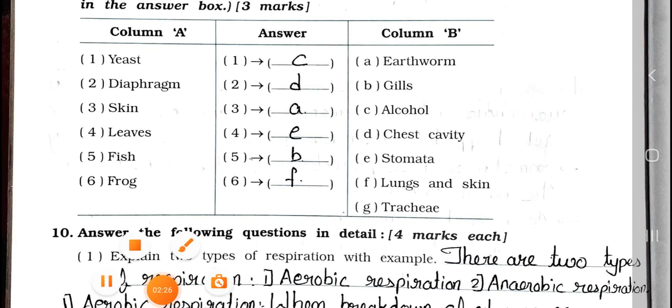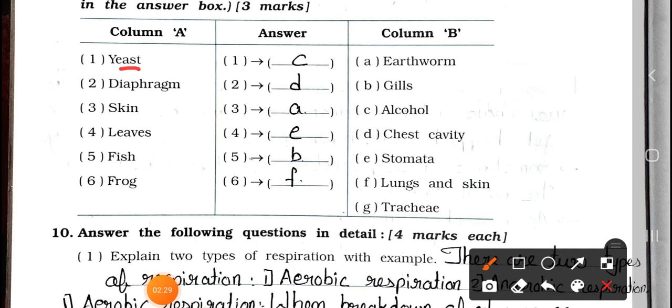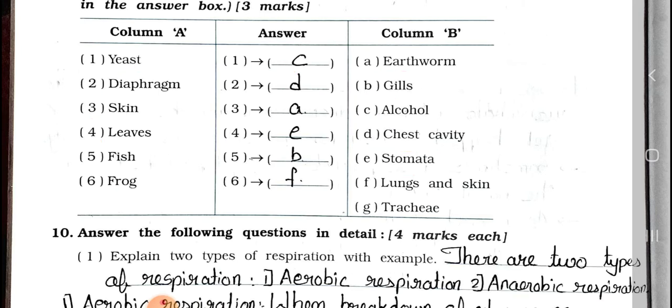Now see the answers. First one: Yeast matches with alcohol C. Second one: Diaphragm matches with D, chest cavity. Number 3: Skin matches with the earthworm A. Number 4: Leaves match with E, stomata. Number 5: Fish matches with B, gills. Number 6: Frog matches with lungs and skin, F.